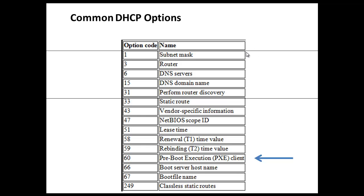The DHCP server is also responsible for giving other configurations, for example, the router, the DNS server, and these options that you see listed here.